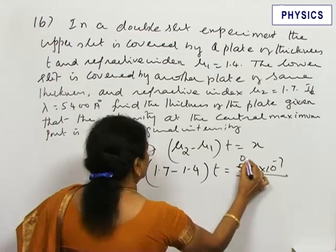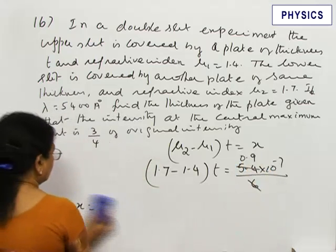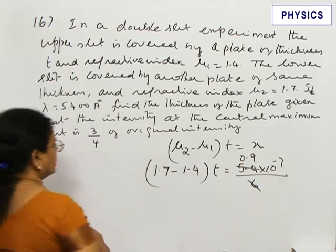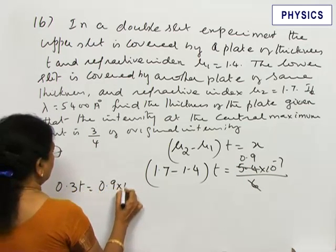So, this becomes 0.9 × 10⁻⁷. On the left hand side, we have 0.3. So, 0.3t equals 0.9 × 10⁻⁷.